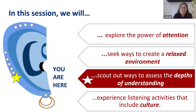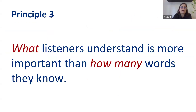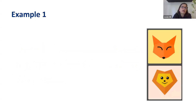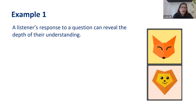One difficult thing when teaching listening comprehension is how we evaluate it. Often we fall into the trap of just giving a score — but that doesn't really evaluate the student's level. Principle three is that what listeners understand is more important than how many words they know. I'm going to demonstrate this by telling you a story I read in a primary book when I was teaching students in Malawi — it's a story about the lion and the fox. I will ask you a question at the end, and your answer will tell me what level of understanding you have.